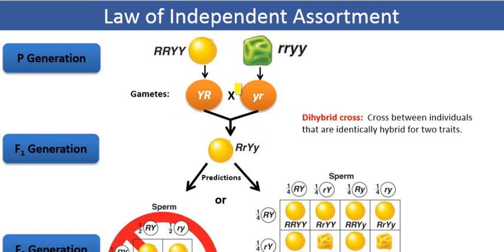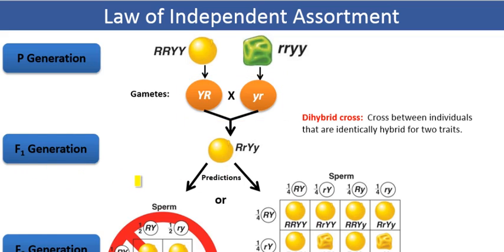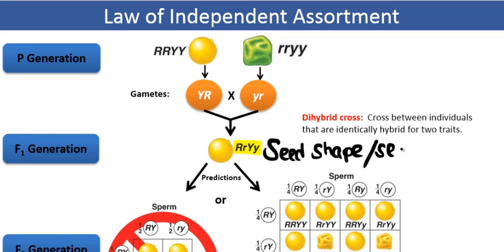When we mate the parental generation and cross those two pure breeding lines, we get an F1 generation — a first filial generation — that are dihybrid. What we mean by dihybrid is that they are heterozygous for two characters being followed in the cross: seed shape and seed color. The F1 plants exhibit both dominant phenotypes — all F1 progeny will have yellow seeds and round-shaped seeds.